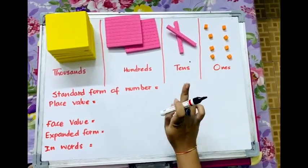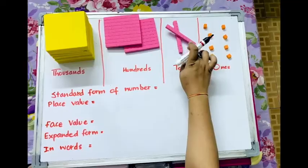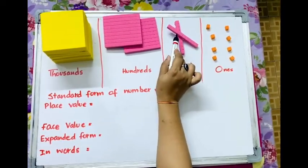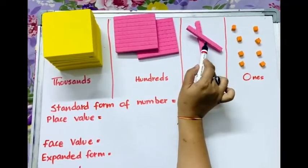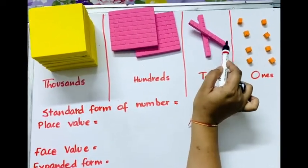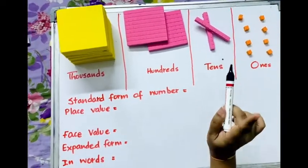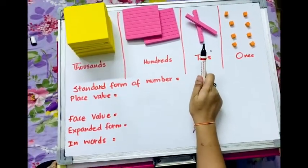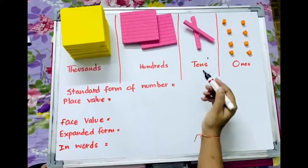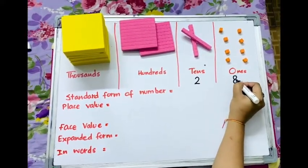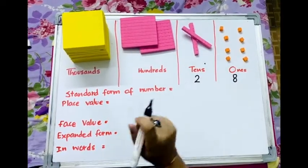Next, I have this tall rod which has, let's count, 1, 2, 3, 4, 5, 6, 7, 8, 9 and 10 blocks. That is why we call it tens. And how many of these we have? We have two of these, similarly as we had 8 ones here.